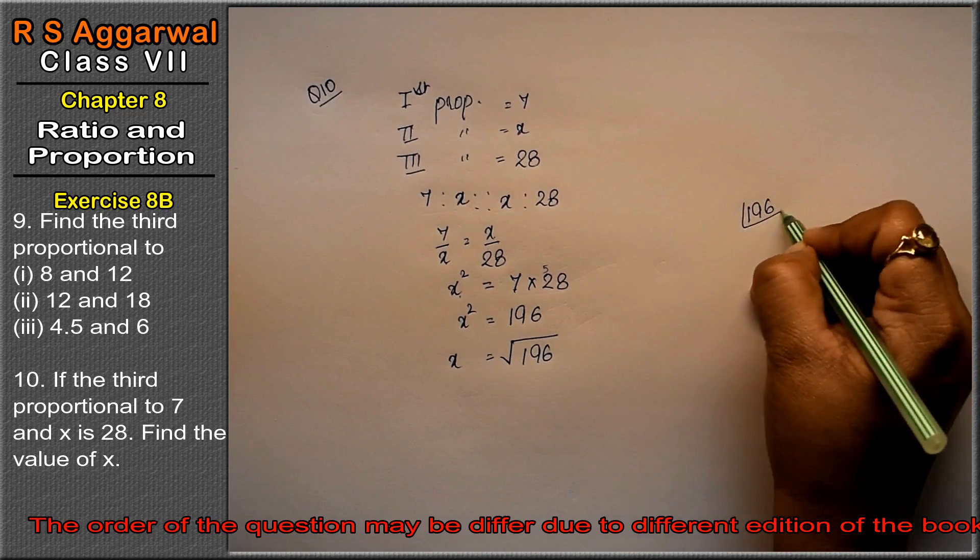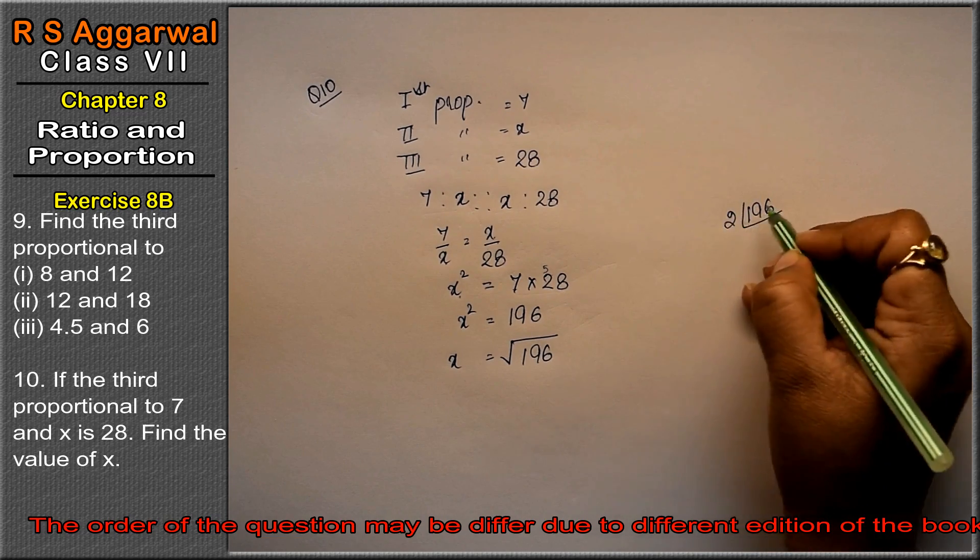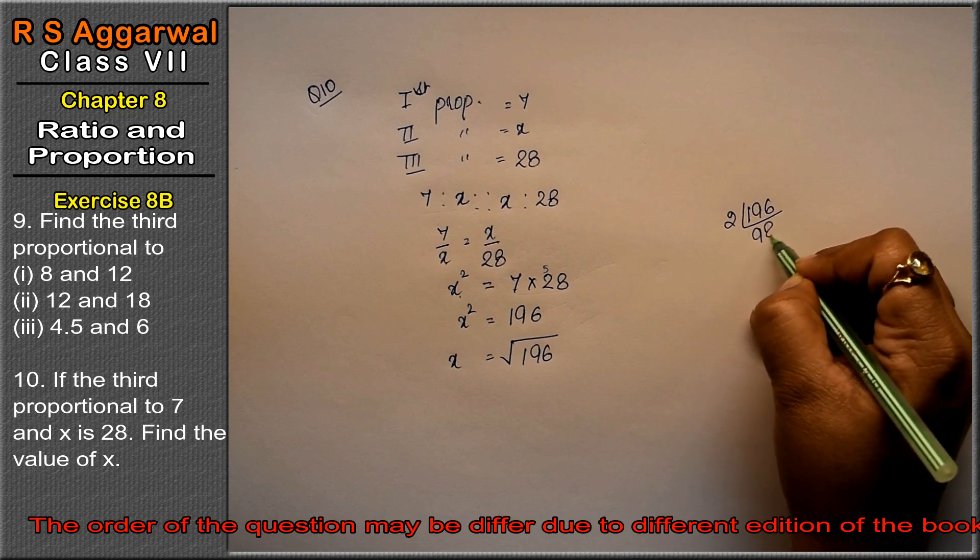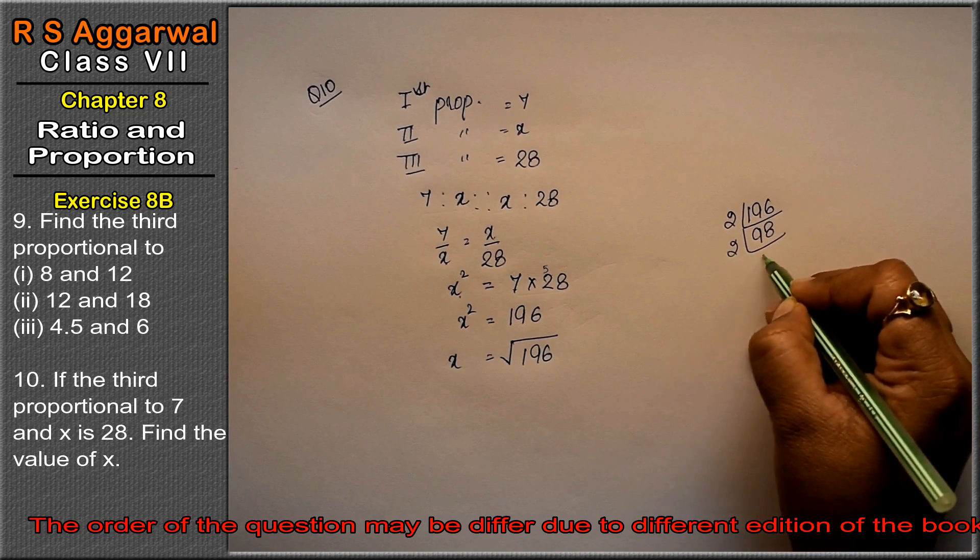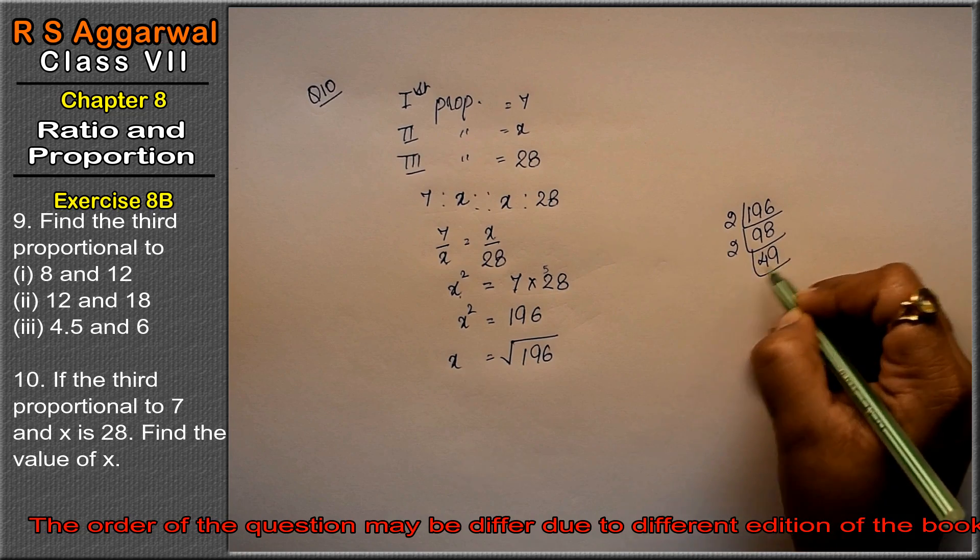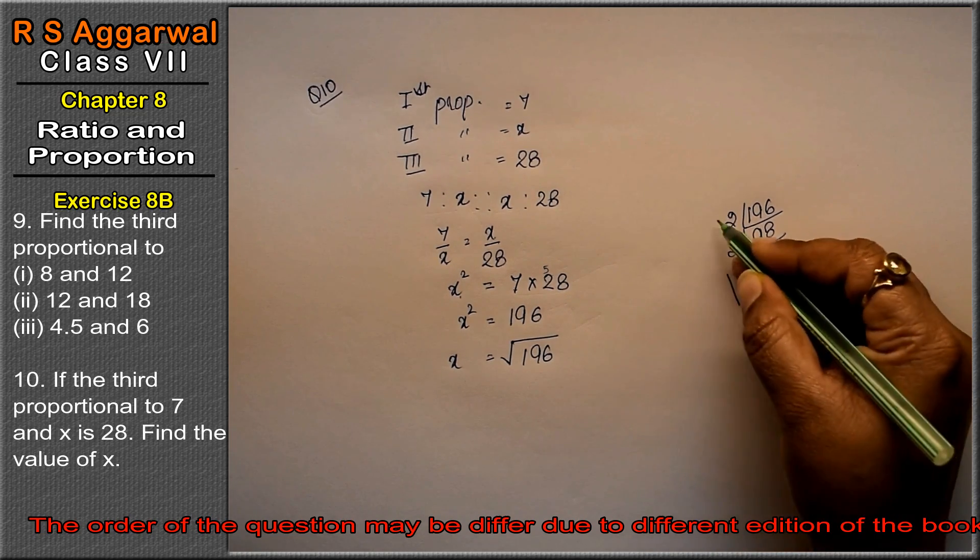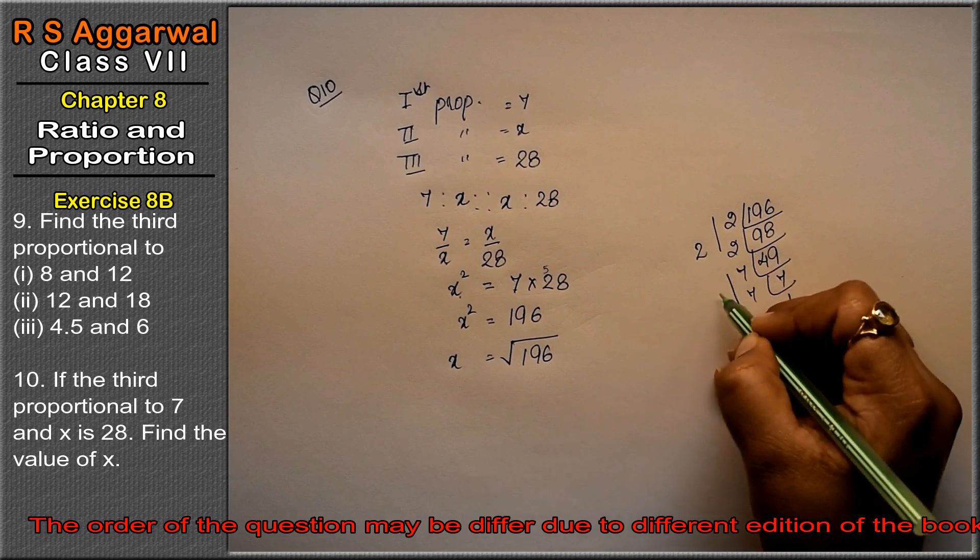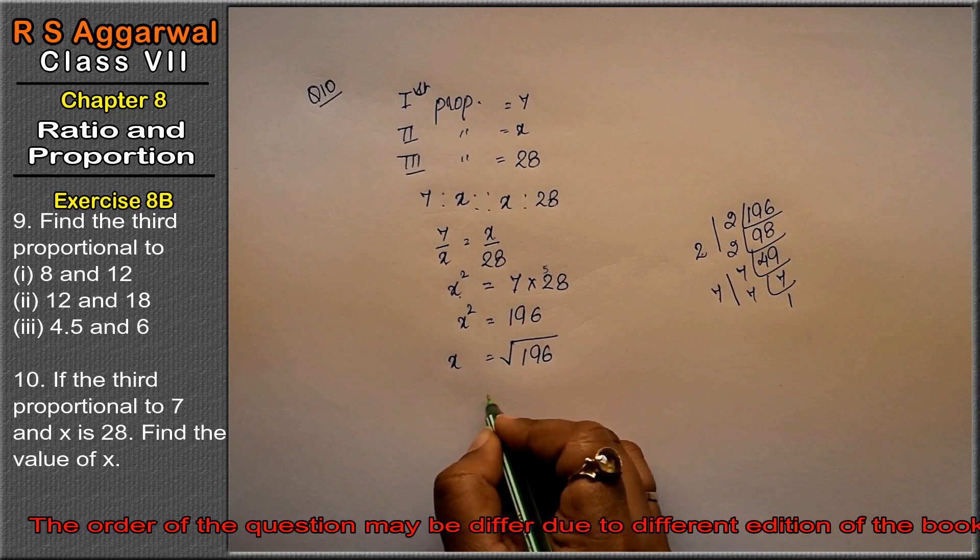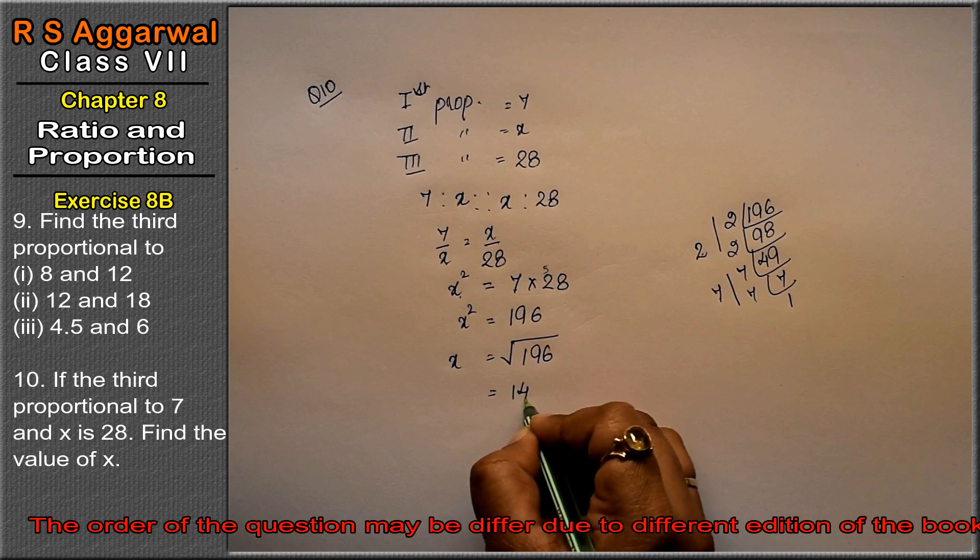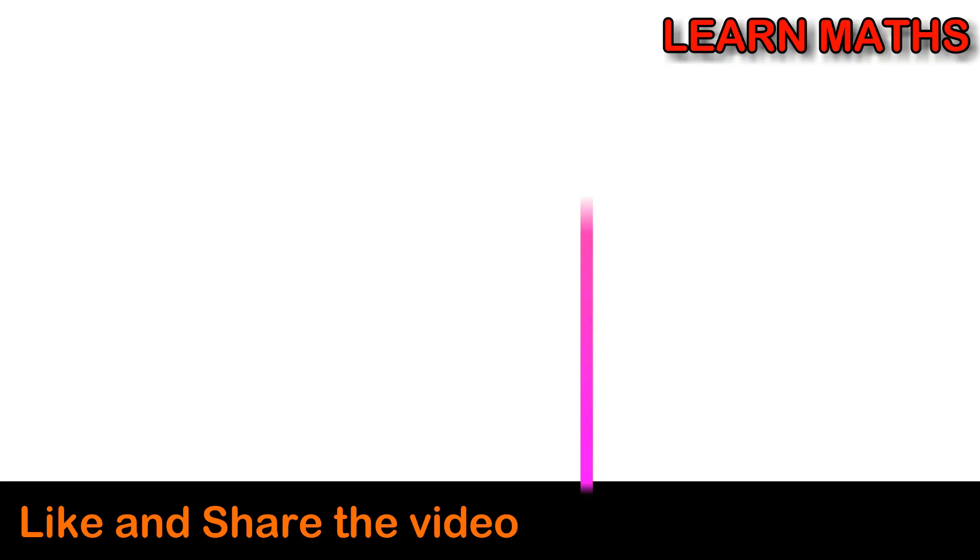2 nines are 18, 2 eights are 16, again 2 fours are 8, 2 nines are 18, 7 sevens are 49, and 7 ones are 7 - two pairs. Make two pairs, write one over and multiply it. Equals to 14 is the answer.